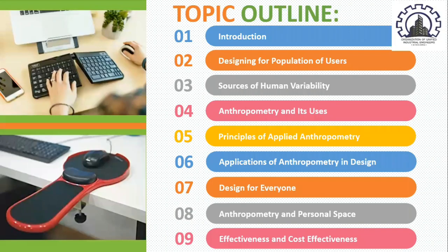There are nine key areas I'm going to be highlighting: first, the introduction; second, designing for a population of users; third, the sources of human variability; fourth, anthropometry and its uses; fifth, principles of applied anthropometry; sixth, the applications of anthropometry in design; seventh, design for everyone; eighth, anthropometry and personal space; and finally, effectiveness and cost-effectiveness.